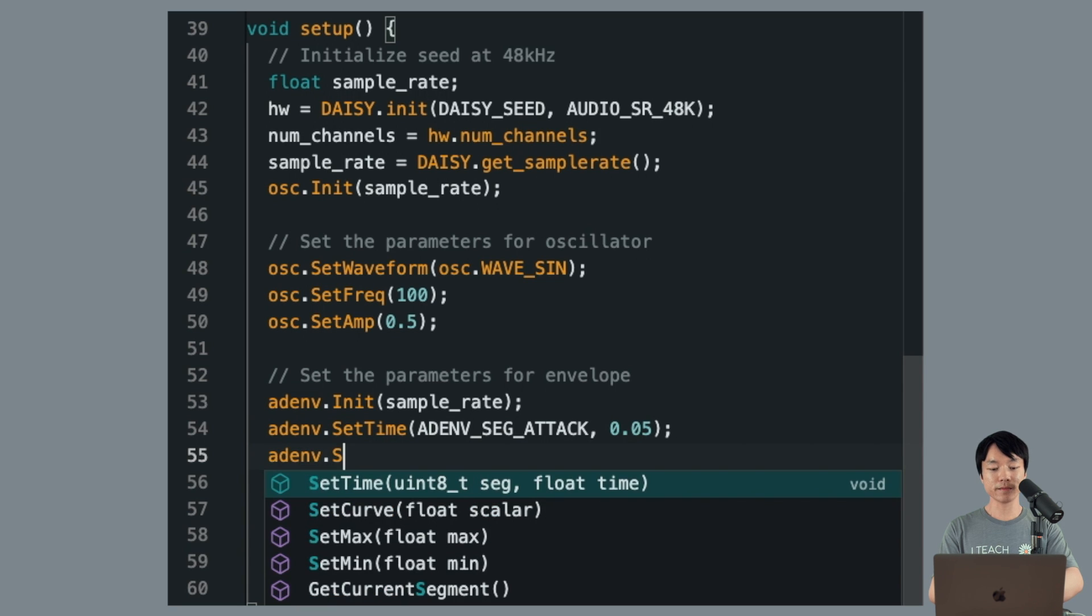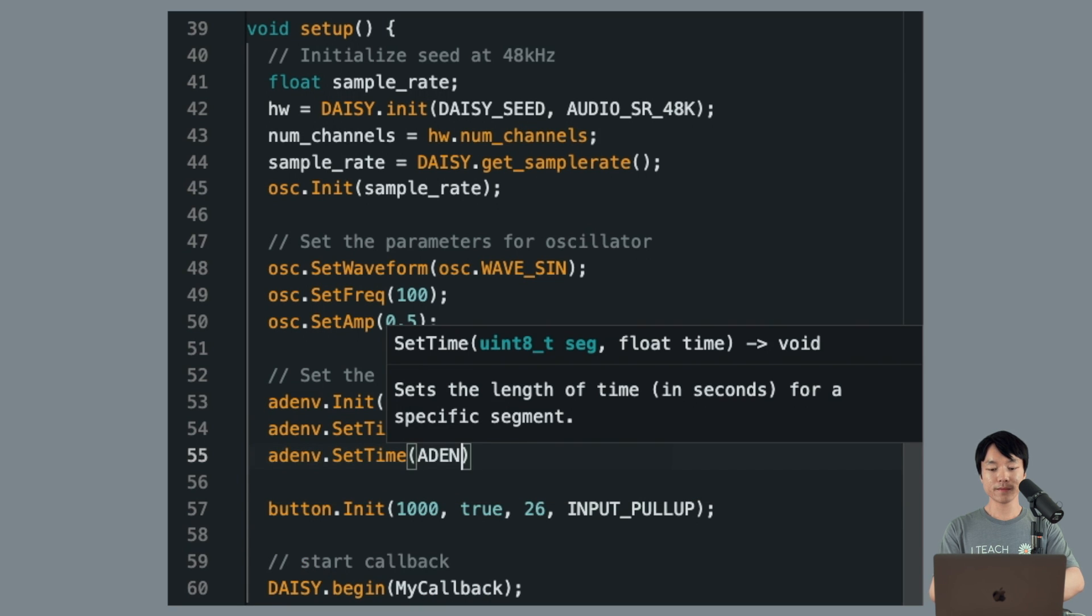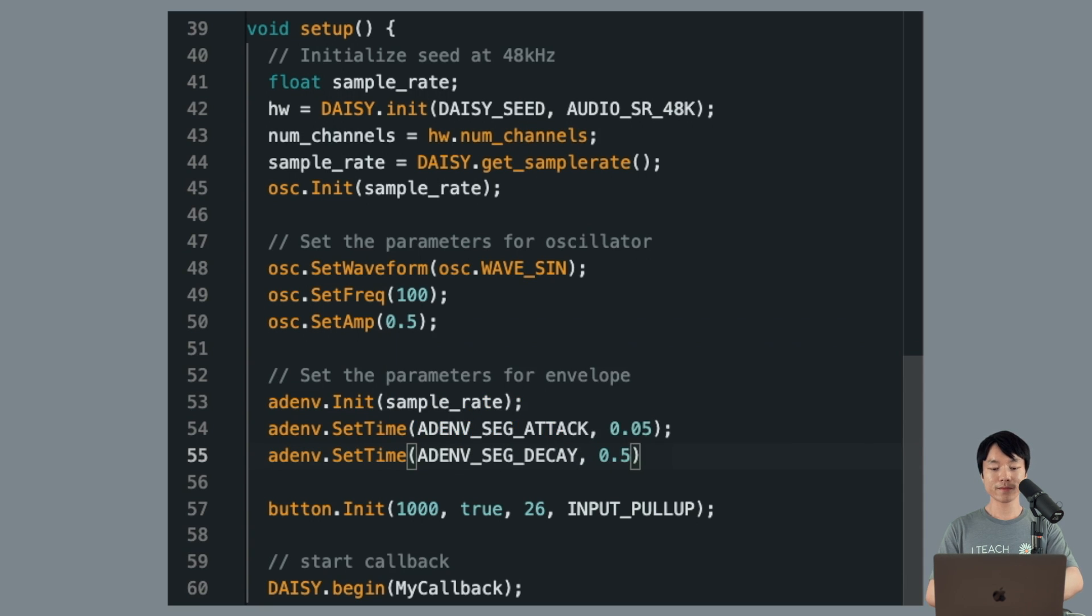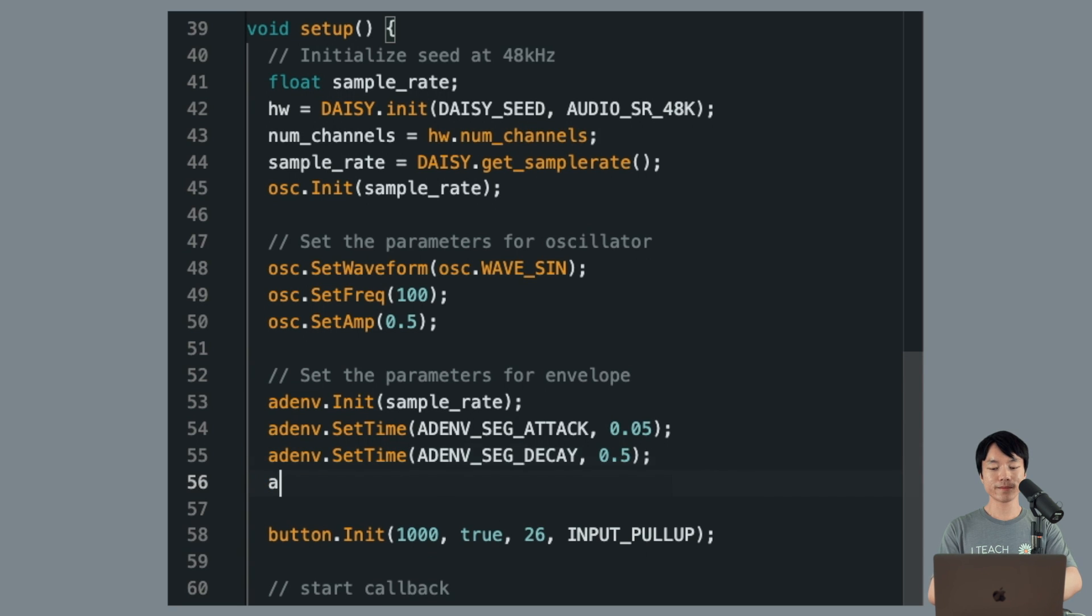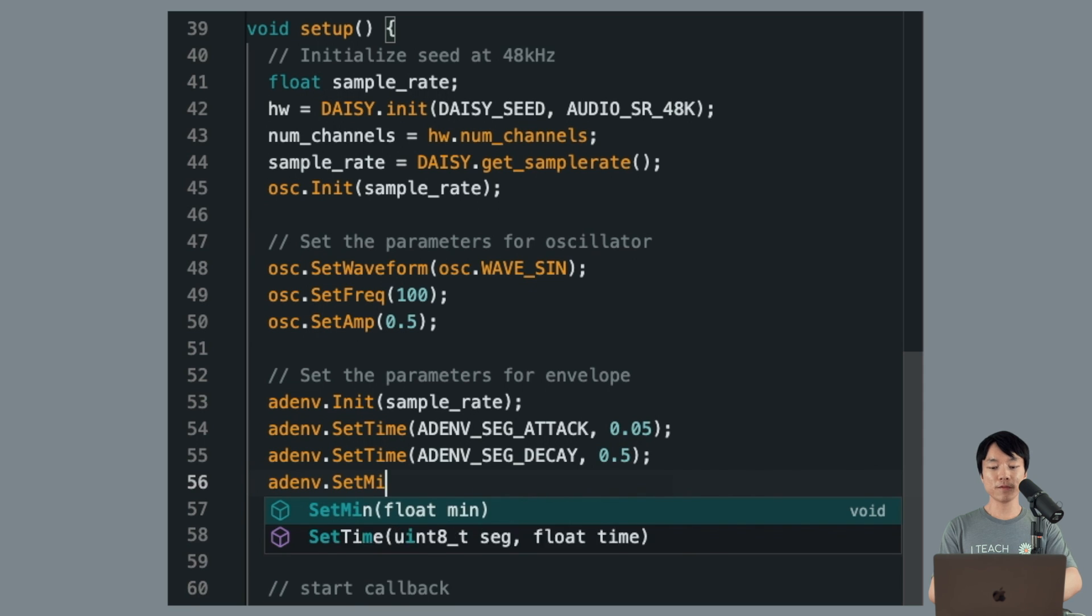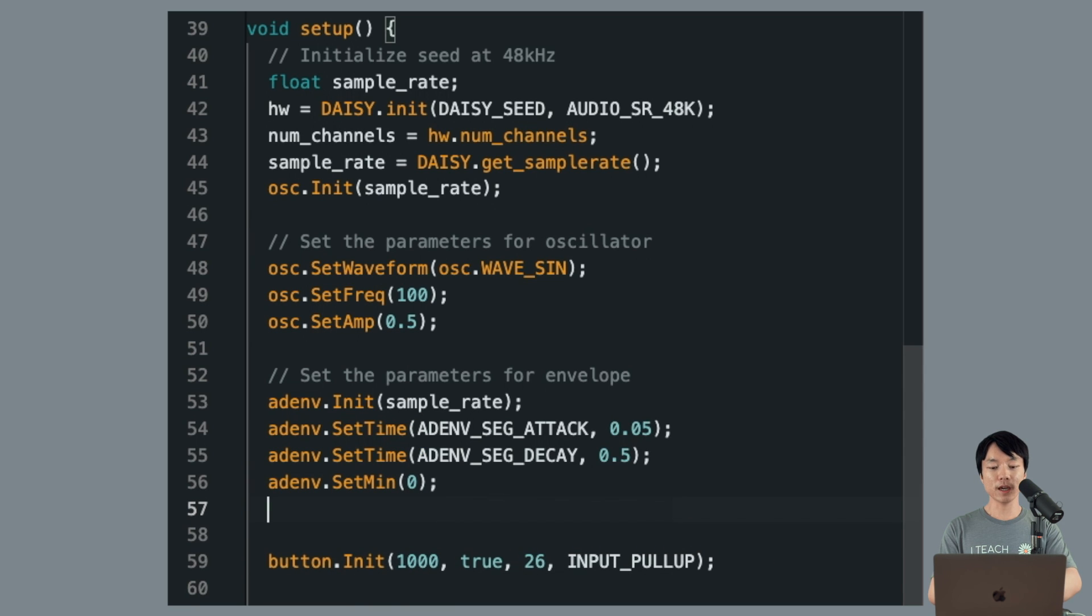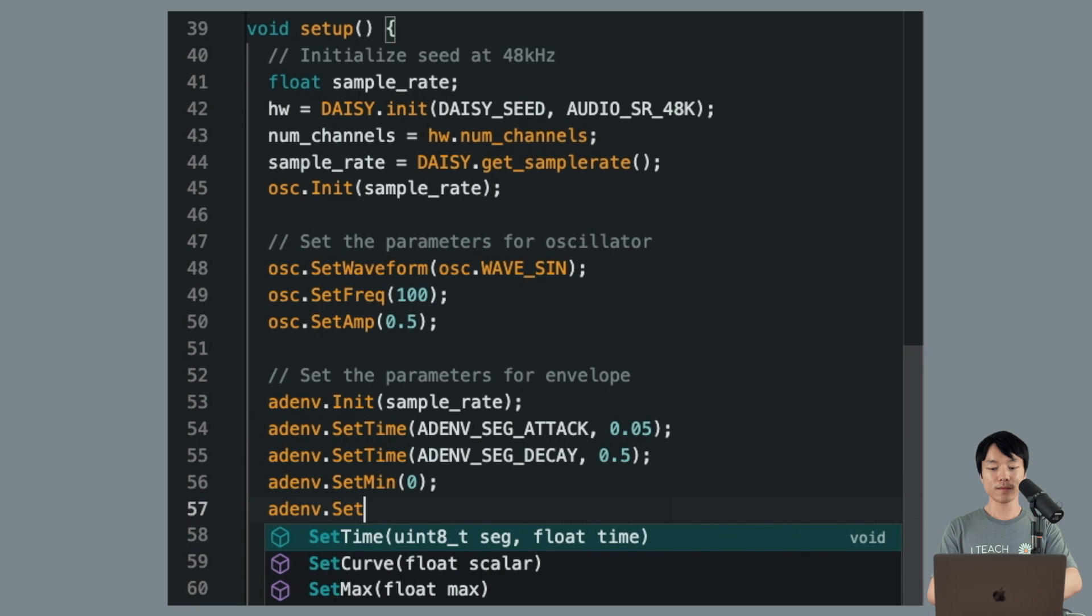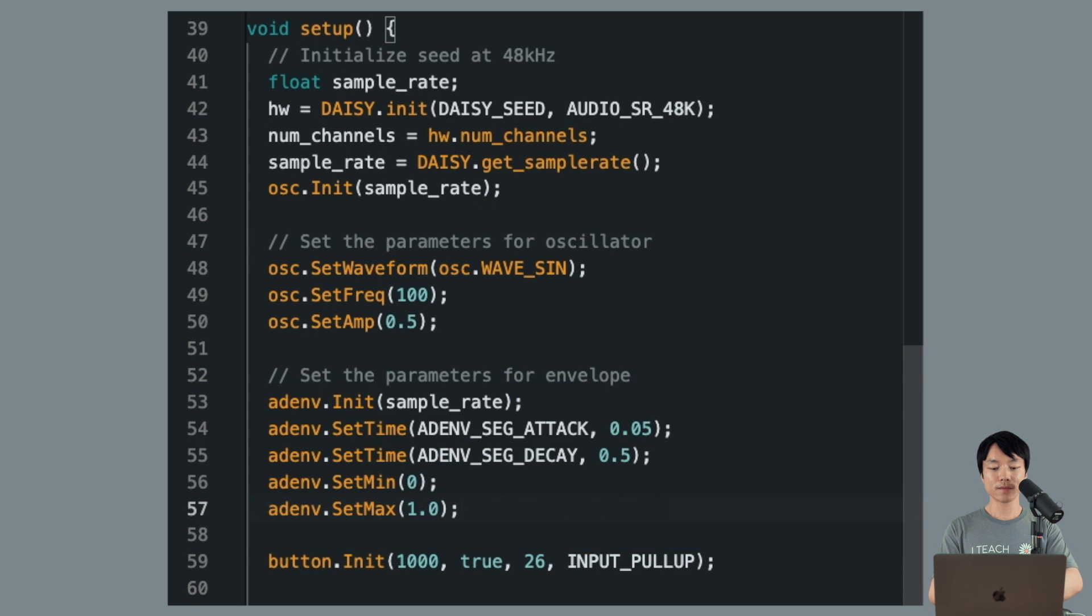And we'll do something similar for DECAY. Let's do 500 milliseconds. And we'll set the minimum value as 0.0 and max value as 1.0. Finally, we'll set the curve as 0.0. So the envelope ramps up from 0.0 to 1.0 in 50 milliseconds. And after it reaches that max value, it'll ramp down to 0.0 in 500 milliseconds.